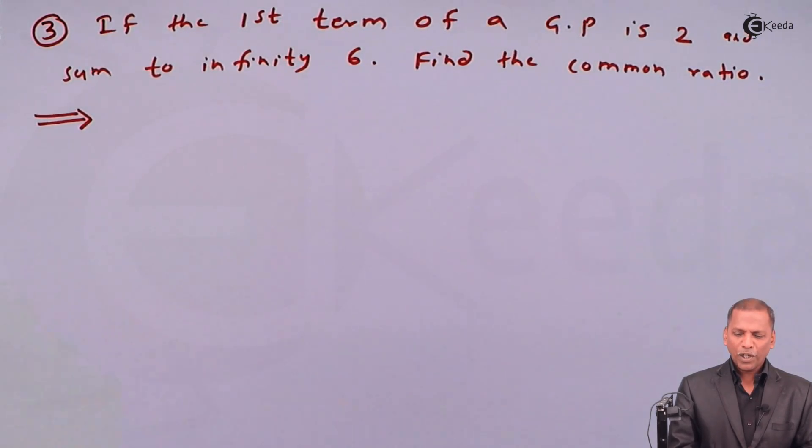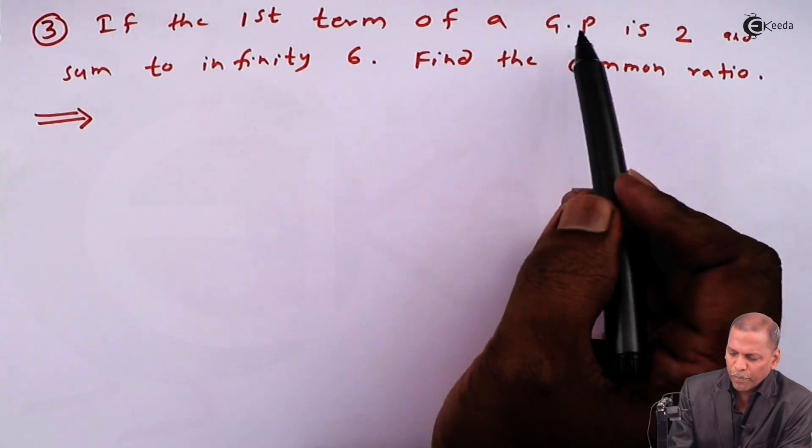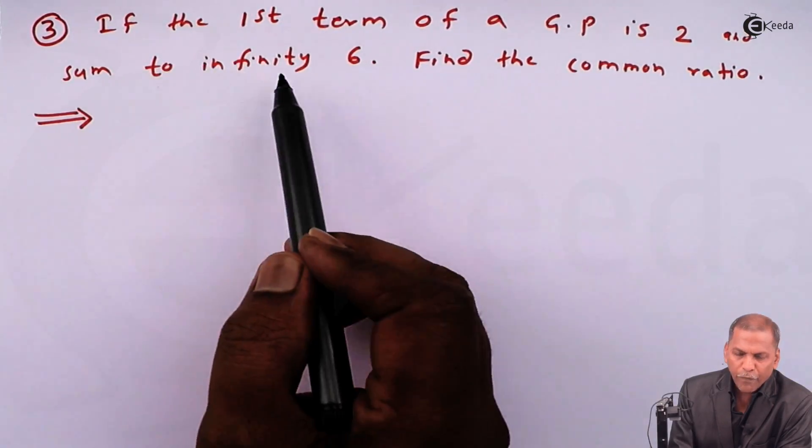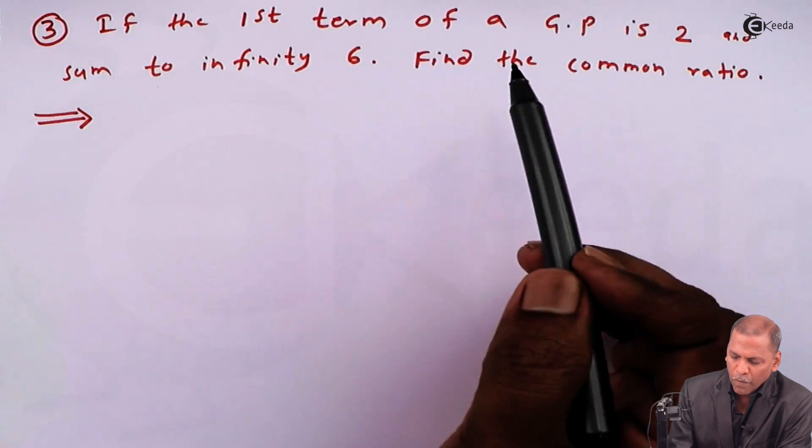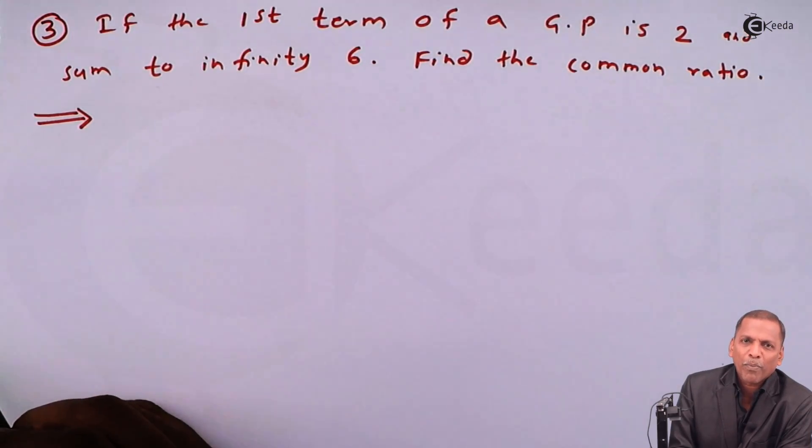The problem number three is: if the first term of a GP is two and sum to infinity six, find a common ratio. Now, let's see the solution. The solution is very simple.